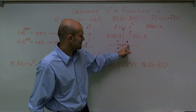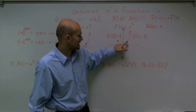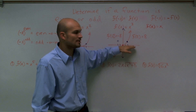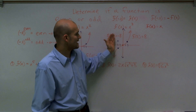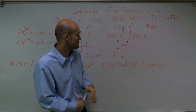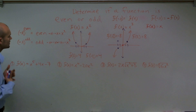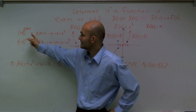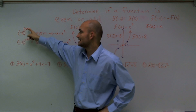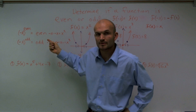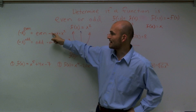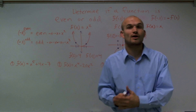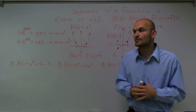If I plug in 2 and get my output, and then plug in negative 2 and get the negative version, that's going to automatically give me a graph that's symmetrical with the y-axis and symmetrical with the x-axis.